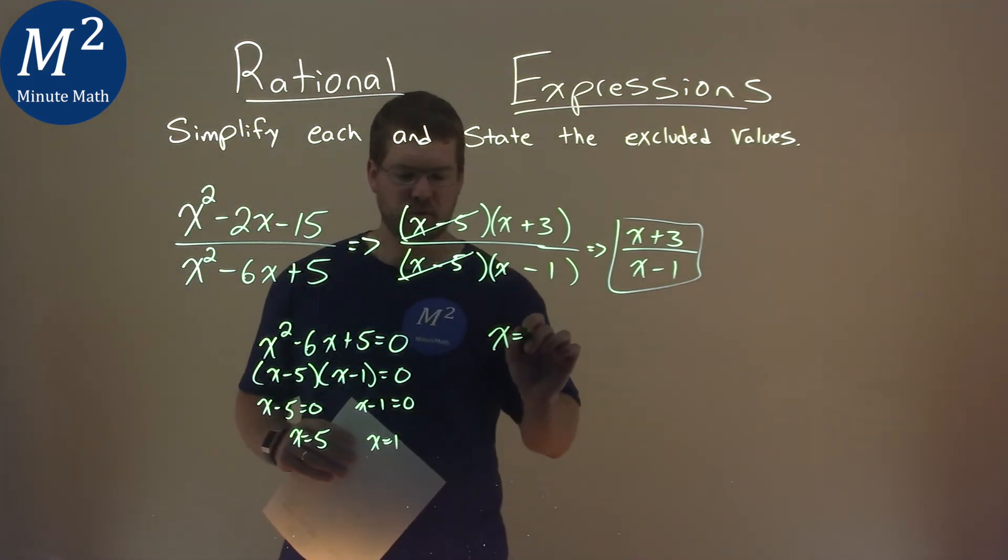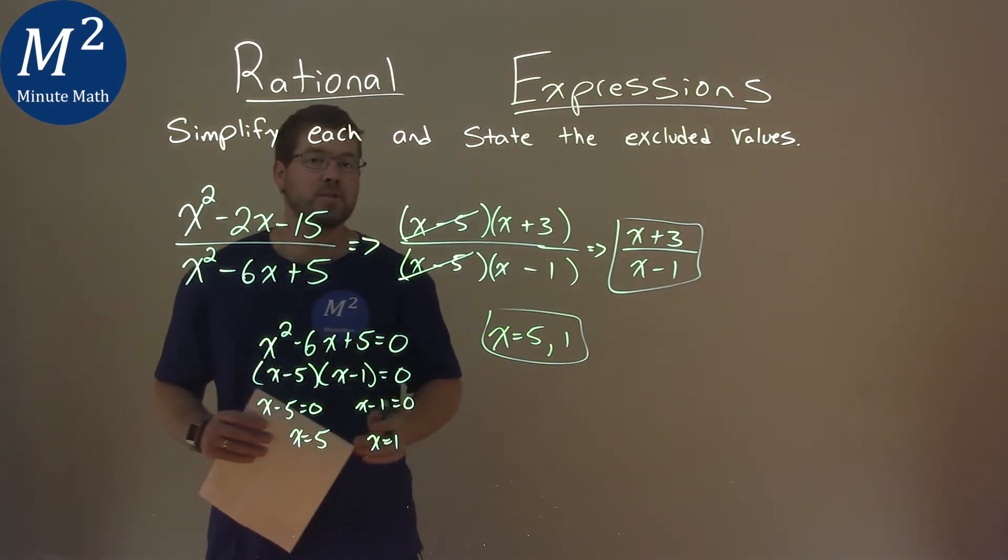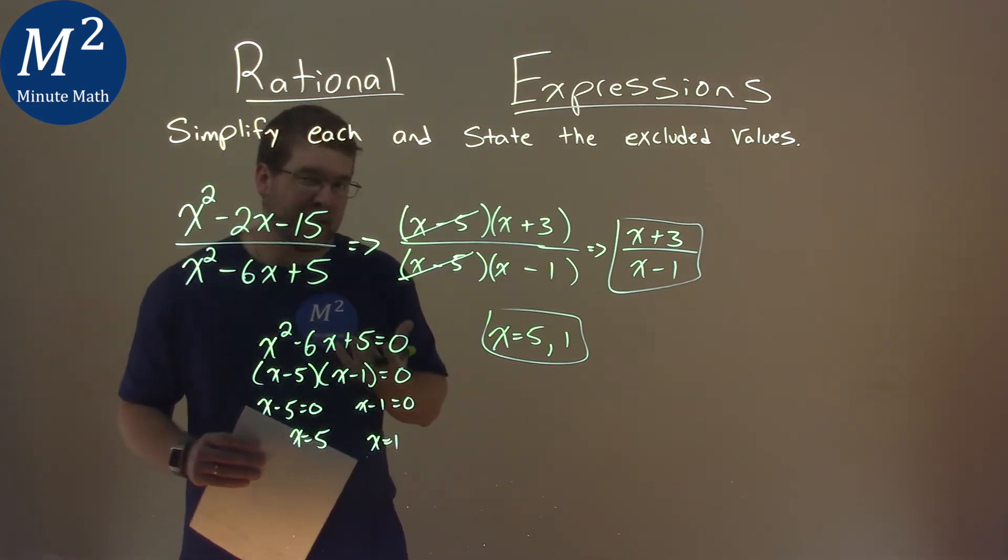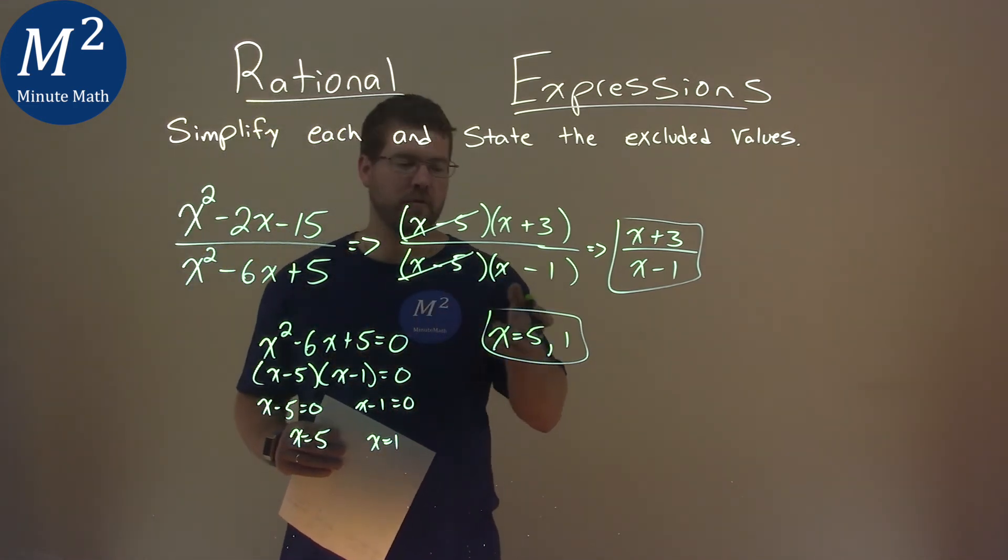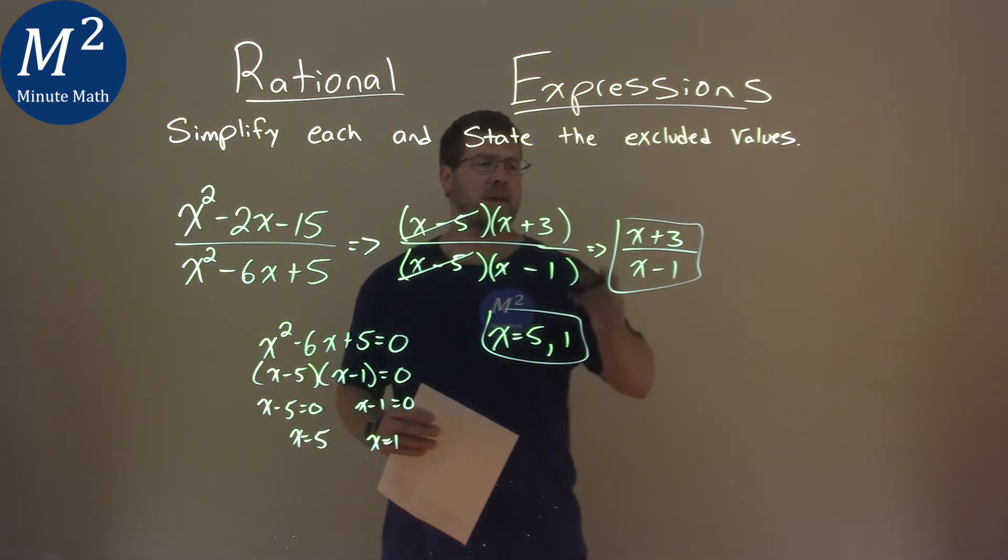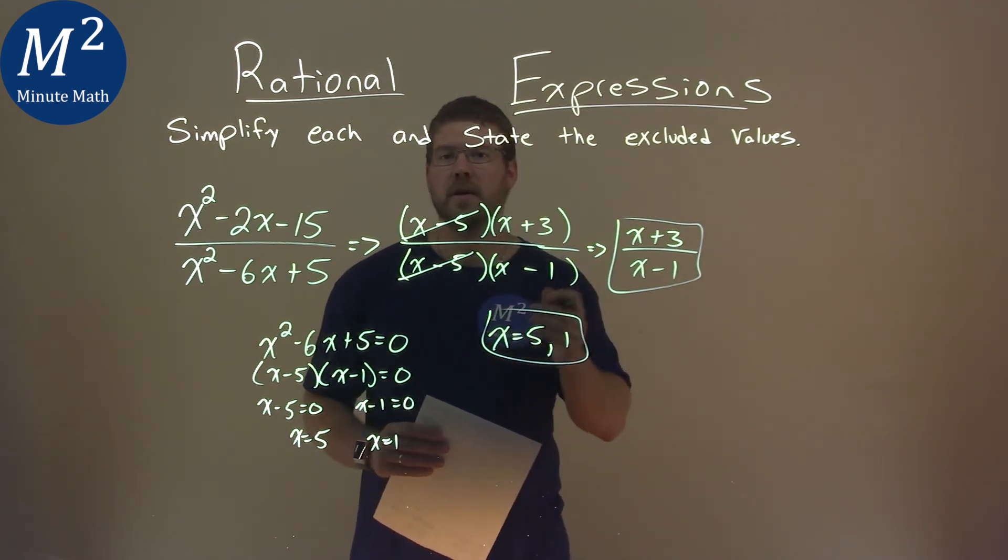So the excluded values, 5 and 1, are the values that when we plug into our original expression cause our denominator to equal 0, meaning we can't divide by 0. Therefore 5 and 1 are the excluded values. Our final answer is x plus 3 over x minus 1, and the excluded values are 5 and 1.